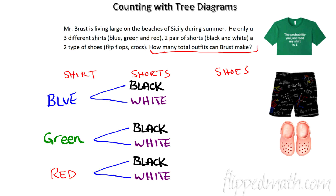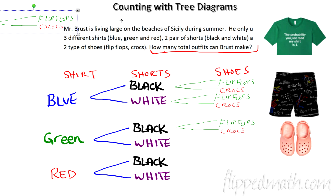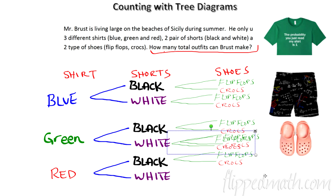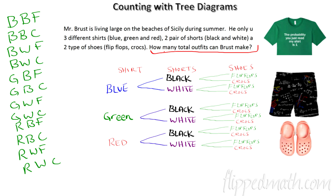For each shirt, he has black and white shorts — so we connect black and white to each shirt branch. Then for shoes, he has flip-flops and crocs for each shorts branch. It gets a little tedious, but it keeps everything organized. Reading across the branches: blue shirt, black shorts, flip-flops; blue shirt, black shorts, crocs; blue shirt, white shorts, flip-flops — and so on, all the way to red shirt, white shorts, crocs.